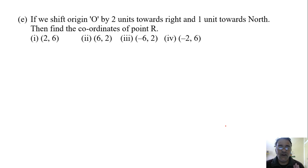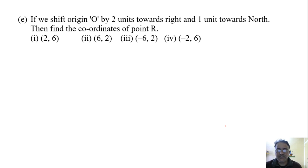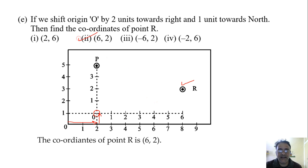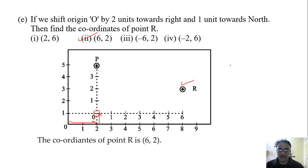Fifth question: if we shift origin O by 2 units to the right and 1 unit upward (north), find the coordinates of point R. With the new origin shifted 2 units right and 1 unit up, the coordinate of R becomes (8−2, 3−1) = (6, 2). So the answer is the second option. This completes case study question number seven. We'll now move to case study question number eight.